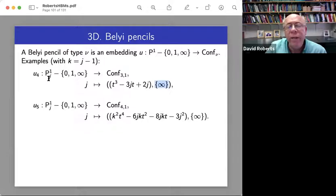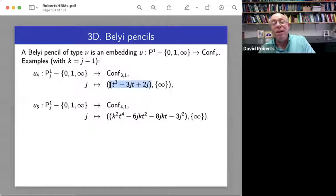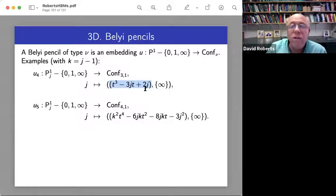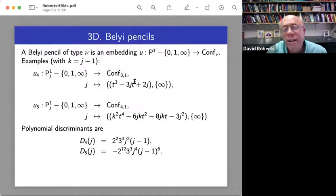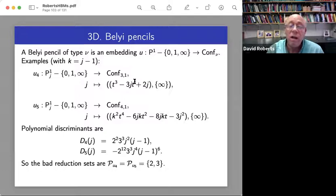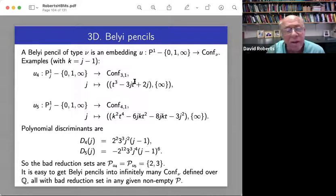All right. So Belyi pencil. So a problem is that we have this degree 10 base. And if we want to get a Belyi map, we need to take a one parameter slice of it. So we can't just take any one parameter slice. We have to stick P1 in there so that 0, 1, and infinity run into the boundary of configuration space.